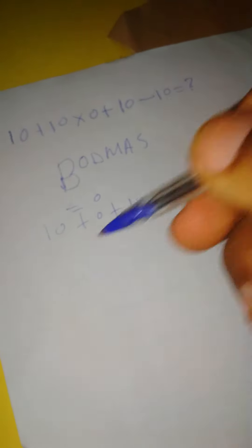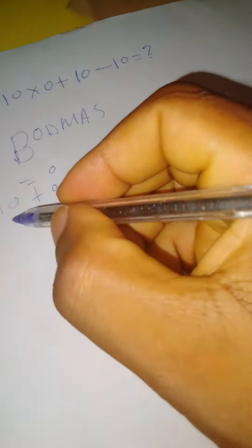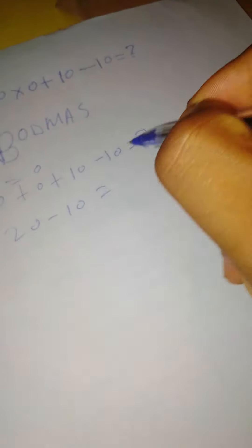Then the next thing is you do addition. This 10 plus 0 plus 10 gives 20 minus 10 equals question mark.